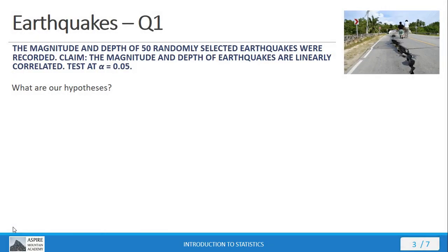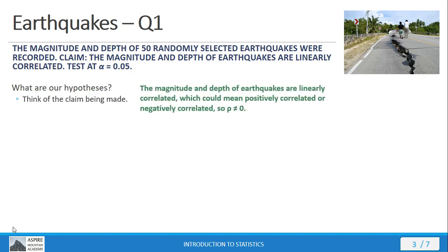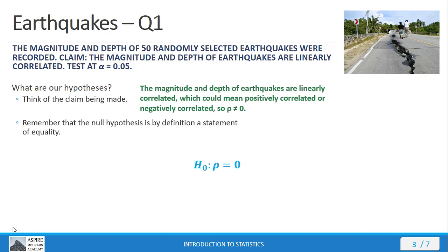The first question we're asked is, what are our hypotheses? You can answer that question easily when we think about the claim being made. Here the claim is that we have linear correlation — that could mean positive or negative correlation. Either way, rho is not going to be equal to zero, because if rho equals zero, that means there's no linear correlation. So the null hypothesis will, by definition, be a statement of equality: rho equals zero. The alternative hypothesis typically comes from our claim, so here we see the same null and alternative hypotheses we've seen all along. This is pretty stock standard stuff.